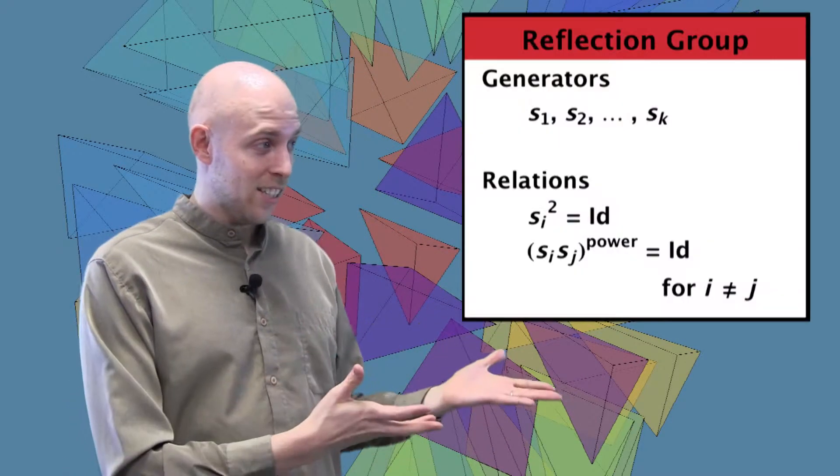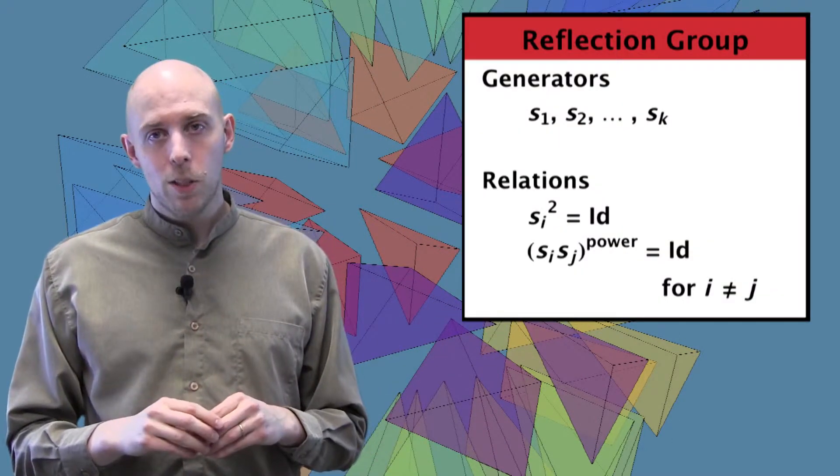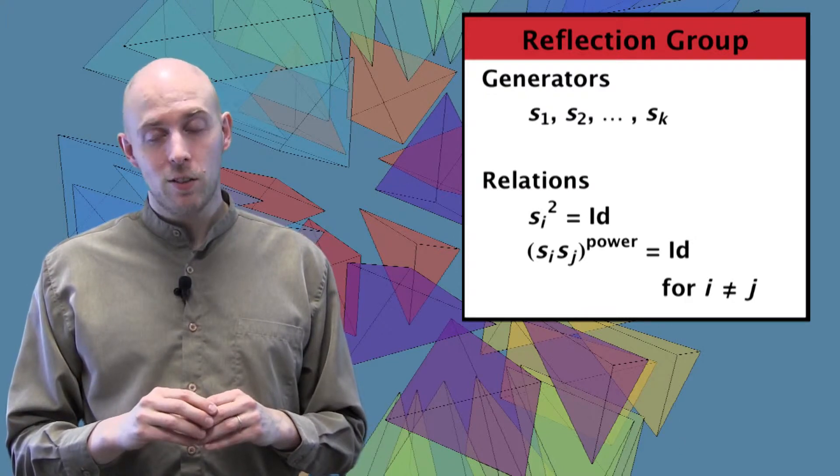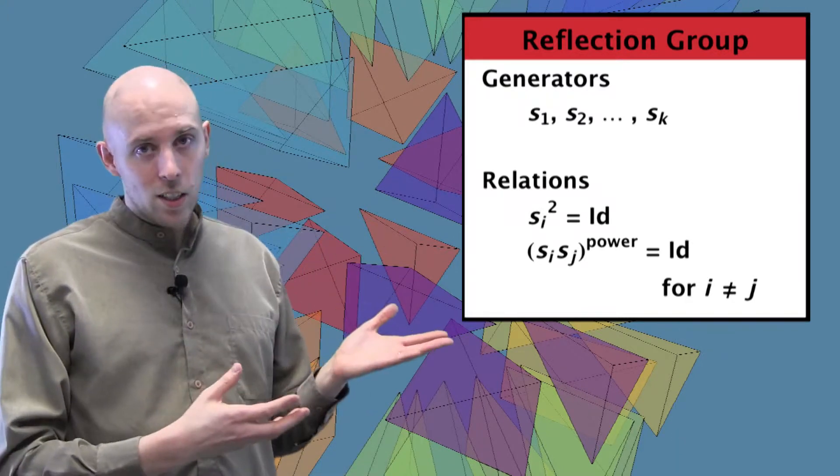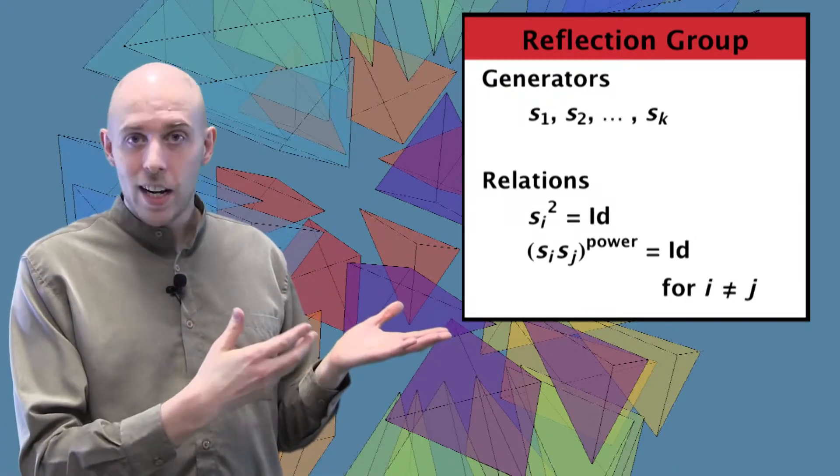So it's natural to understand reflection groups like this. A reflection group G is completely determined by its generators and by its relations. For generators, we're going to take some number of generators, S1 through SK.